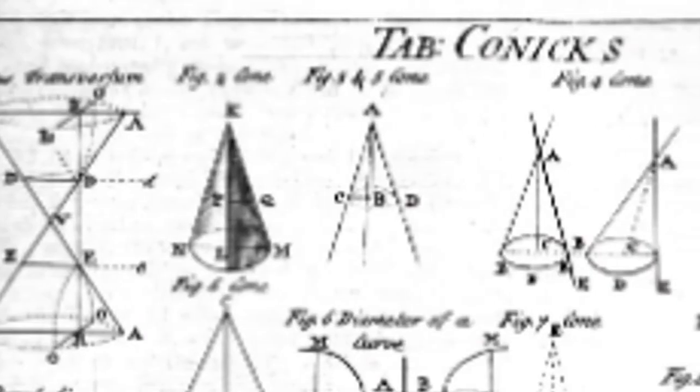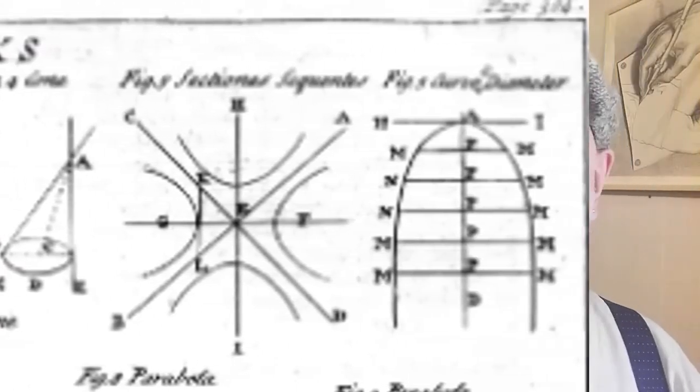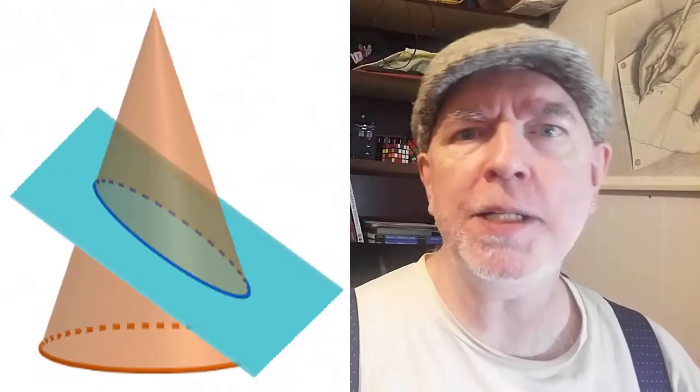Mathematicians have been slicing up cones since the fourth century BC. Here we'll look at one of these famous cross sections, the ellipse.